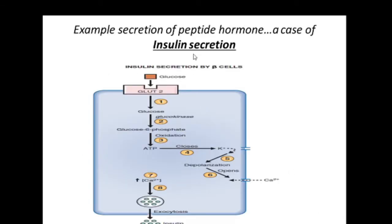For example, how is insulin secreted? Insulin is secreted by the pancreatic beta cells, but the most important stimulant of insulin secretion is glucose. Let's run through these steps: first, glucose enters the GLUT2, which are glucose transporters, by facilitated diffusion, into the pancreatic beta cell. Inside the pancreatic beta cell, there are glucokinases — enzymes that convert glucose to glucose-6-phosphate.